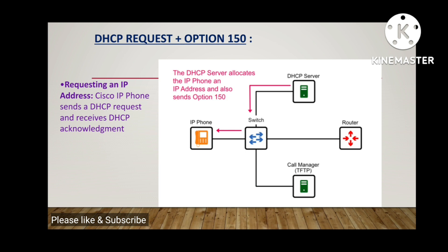The DHCP server offers an IP address and also a few options: the default gateway address, DNS server information, and also a unique option — Option 150. Option 150 has the address of the TFTP server. Option 150 provides a list of TFTP server addresses and is a Cisco proprietary option, whereas Option 66 provides a single TFTP server address.